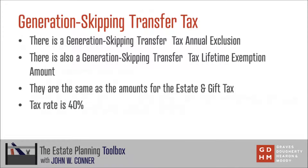Much like the estate and gift tax, just because someone makes a transfer subject to the generation-skipping transfer tax does not necessarily mean that there will actually be any tax that has to be paid, and that's for a couple of different reasons. One is that, much like the estate and gift tax, there is an annual exclusion that applies to generation-skipping transfers. Just like the annual exclusion for the estate and gift tax, it is $15,000 on a per beneficiary basis, and also like the estate and gift tax annual exclusion, it can be split by spouses, meaning they can make a combined $30,000 of generation-skipping transfers to skip persons that will qualify for the annual exclusion and will not require the filing of a gift tax return. This would apply to direct skips as well as gifts made to trusts subject to the generation-skipping transfer tax as an indirect skip, though there are some formalities that would need to be met for those trusts, so be sure to discuss those with your estate planning attorney.